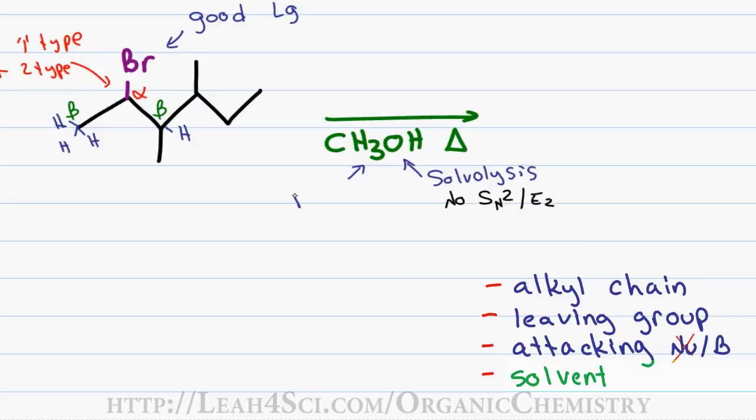Next we look at methanol from the solvent perspective and determine that it's polar protic meaning it can stabilize any charges that form in solution including the bromine leaving group and any carbocations that form. And finally we have the addition of heat. Heat simply tells us that the elimination product will be favored over substitution. By looking at all of this together we determine that yes, an E1 reaction can take place.